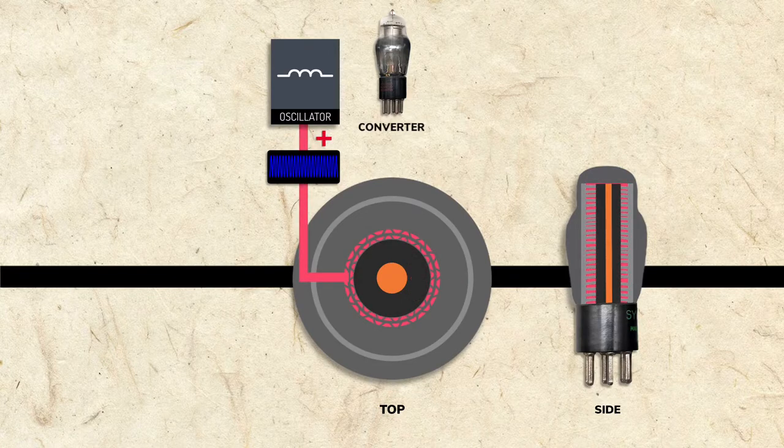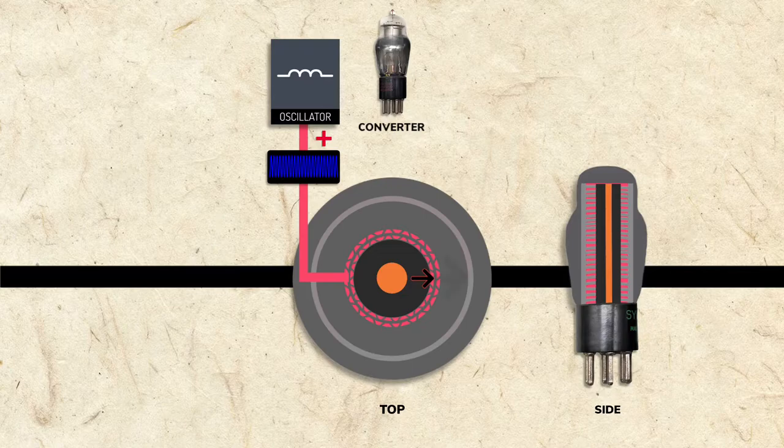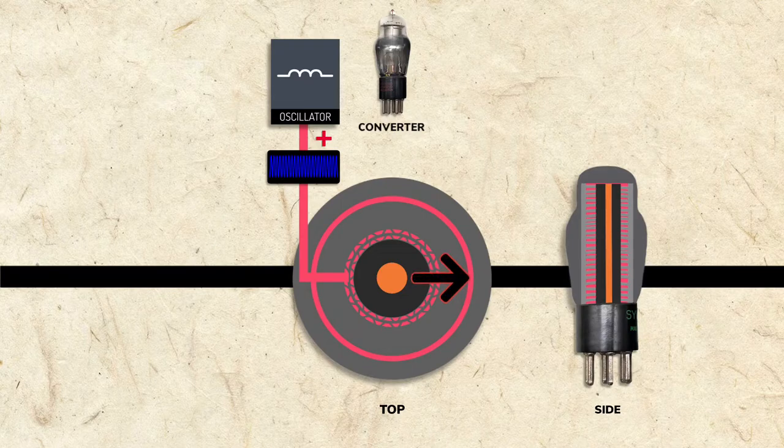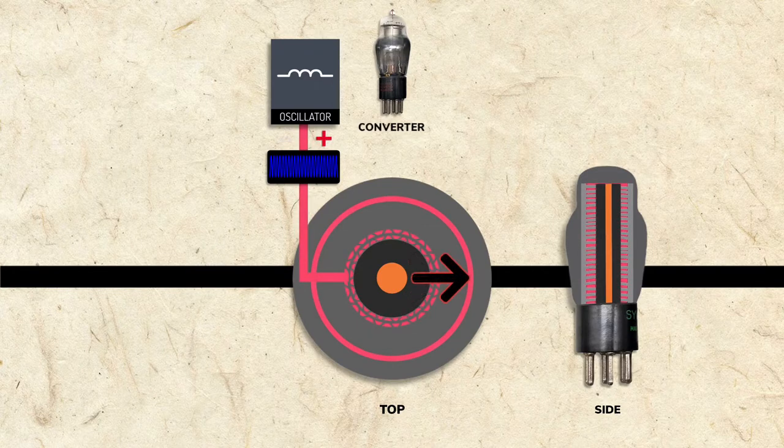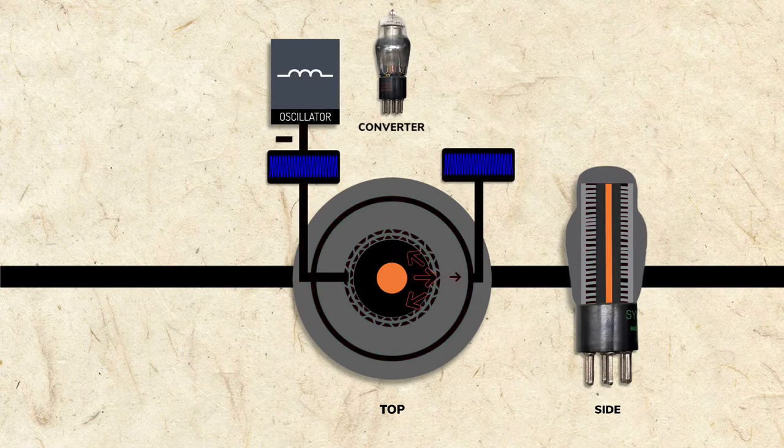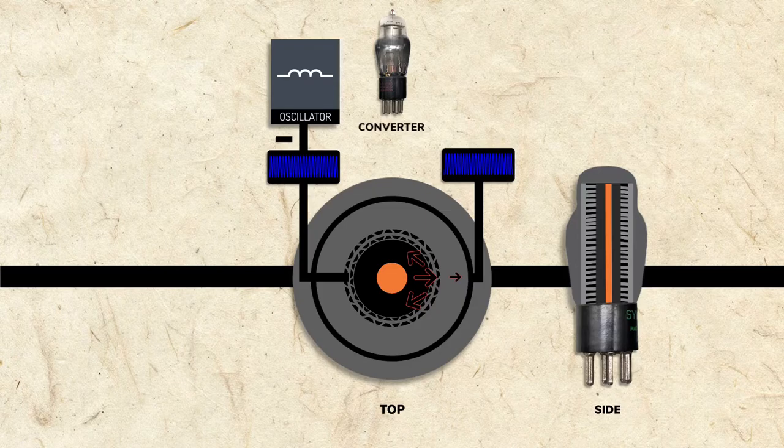When the signal is more positive, the grids attract the electrons, and more current passes to the plate. Because the grids are changing from negative to positive in relation to the oscillator signal, that same signal is duplicated at the plate.